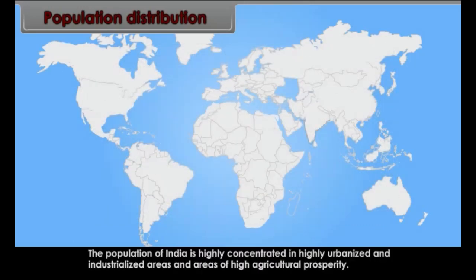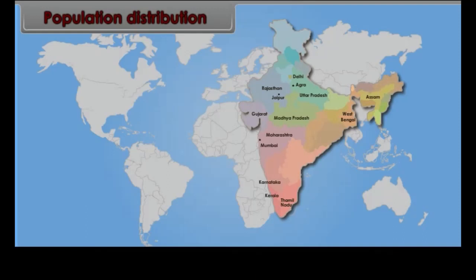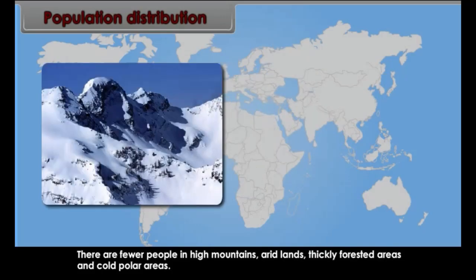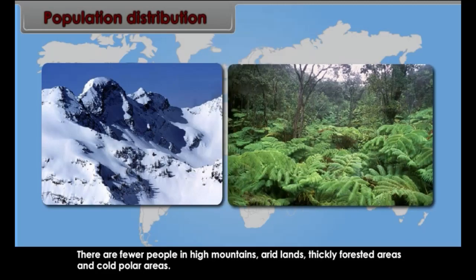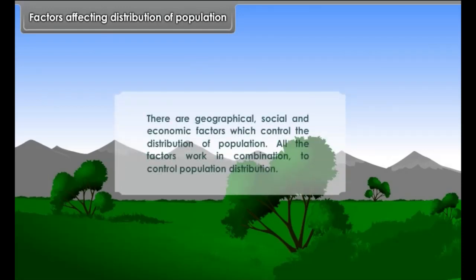The population of India is highly concentrated in highly urbanized and industrialized areas and areas of high agricultural prosperity. There are fewer people in high mountains, arid lands, thickly forested areas and cold polar areas. Factors affecting distribution of population include geographical, social and economic factors, which all work in combination to control population distribution.